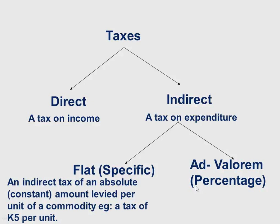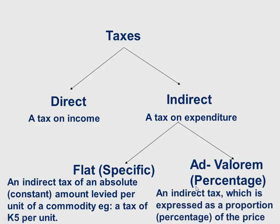Under the ad valorem tax, this is an indirect tax expressed as a percentage of the price. For example, the value added tax in Zambia, which is ad valorem, is sixteen percent. So if you pay that sixteen percent, you are paying a proportion of the price of a commodity — that is the ad valorem tax.